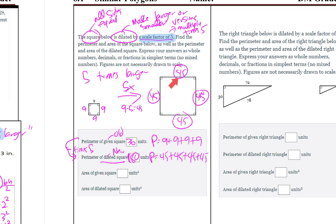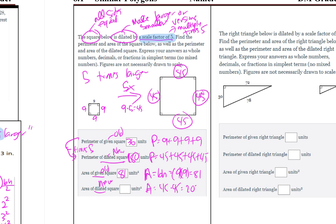For the area: the area of a square is base times height. The given square's area is 9 times 9, which equals 81. The dilated square's area is 45 times 45, which equals 2025. Notice that 2025 equals 9 times 5 squared — that's the key difference. Perimeter is times 5, but area is times 5 squared.